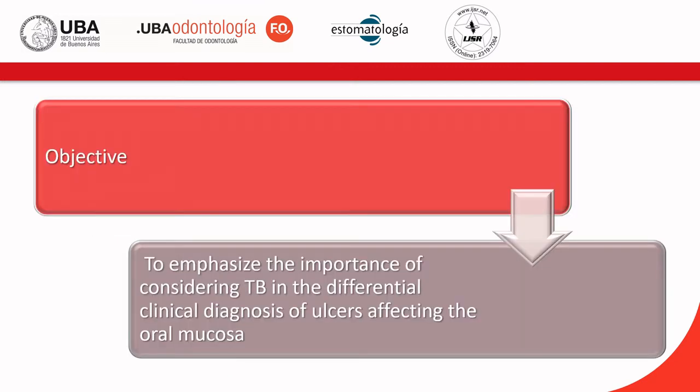We here present an infrequent case of secondary oral TB in an adult HIV-negative patient. The aim of this case report was to emphasize the importance of considering TB in the differential clinical diagnosis of ulcers affecting the oral mucosa.